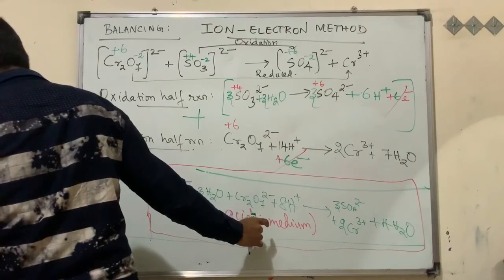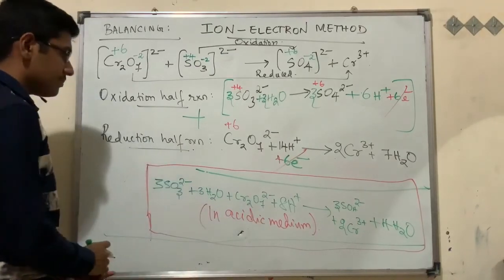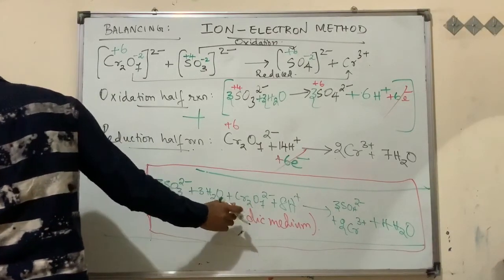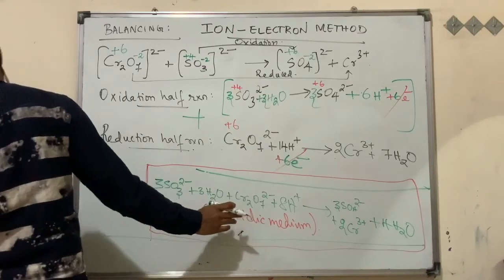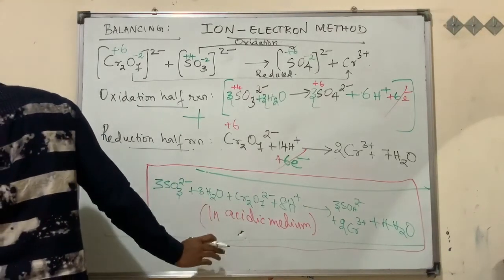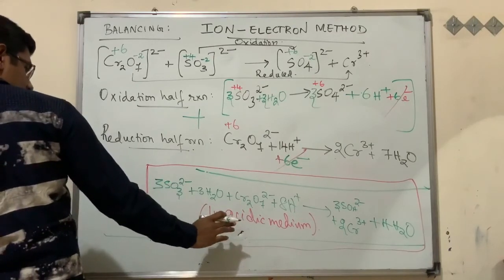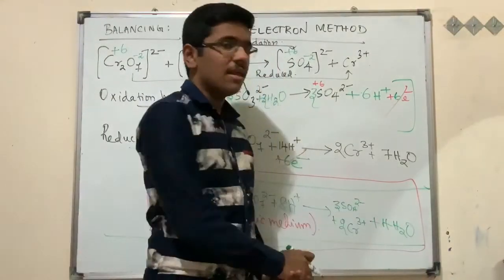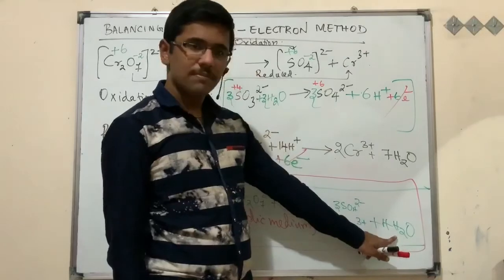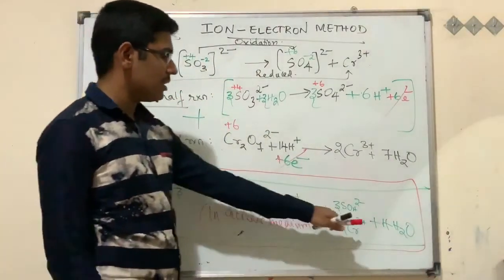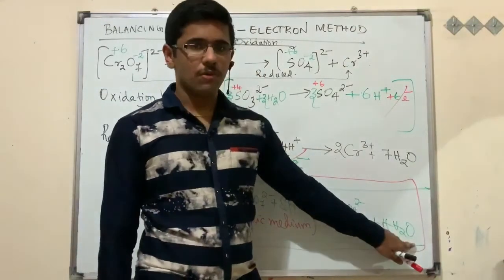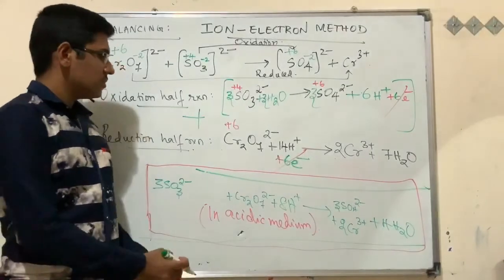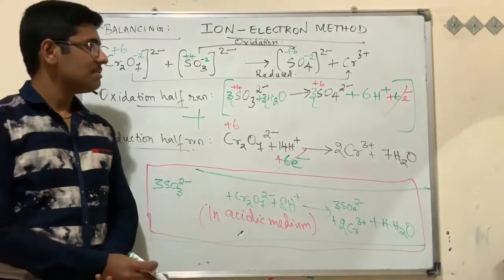Let's verify the balanced equation: Cr₂O₇²⁻ + 3SO₃²⁻ + 8H⁺ → 2Cr³⁺ + 3SO₄²⁻ + 4H₂O. The 3H₂O from the oxidation half was moved to the product side and 7H₂O − 3H₂O = 4H₂O, which is correct. This is the final balanced chemical equation for the redox reaction.